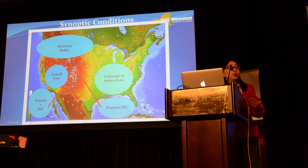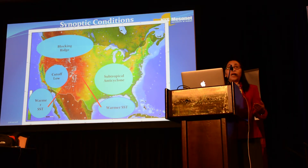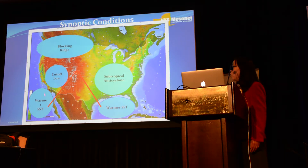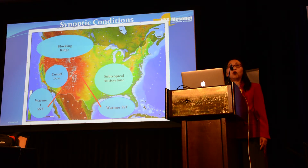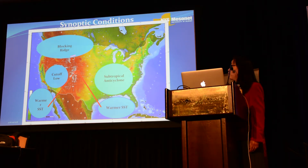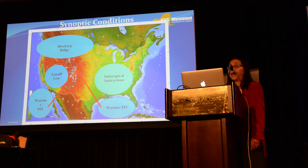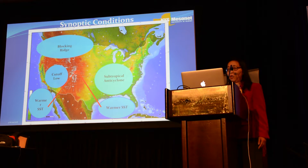The most important question is where did this water vapor come from — that really tells us why this flood happened. To summarize the synoptic conditions: in the tropical Pacific and over the Gulf of Mexico, you get above-normal sea surface temperature, meaning more water vapor available in the atmosphere. In terms of dynamics, there was a blocking ridge in the area at the beginning. Then during the event, a cutoff low formed on the west side and a subtropical anticyclone on the east side. The question is how all of those play a role in water vapor transport and sustaining the water vapor during the flood.